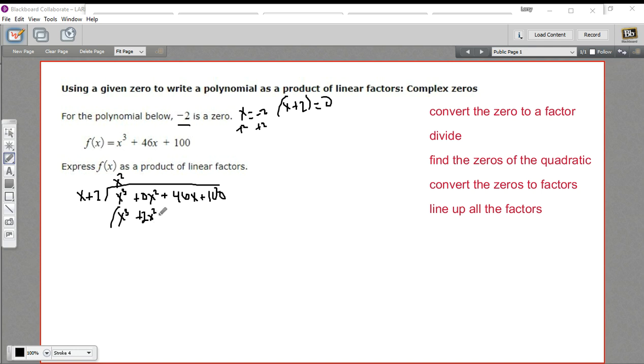Now I have to subtract this. And x cubed minus x cubed is zero. Great. Zero x squared minus two x squared is minus two x squared. So we've finished our subtraction. So we bring down the next term. So that's plus 46x.